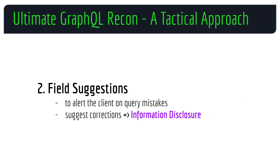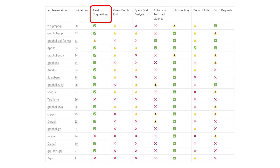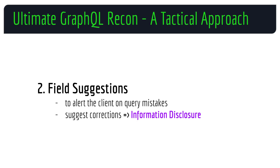Then you have field suggestions, which is in place to alert or inform a client when a query contains spelling or other types of mistakes. The key thing here is that if the implementation has field suggestions, when such a mistake occurs it would suggest the most appropriate alternatives. For an offensive cyber security professional, this could turn into an information disclosure vulnerability.